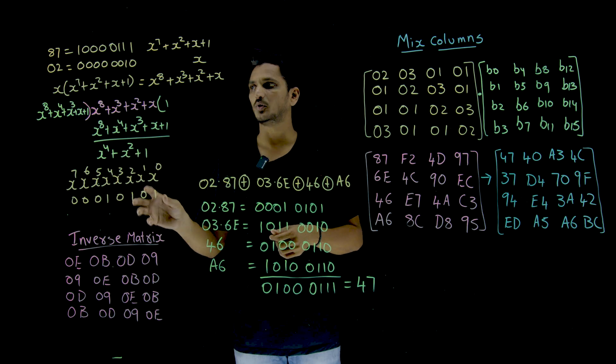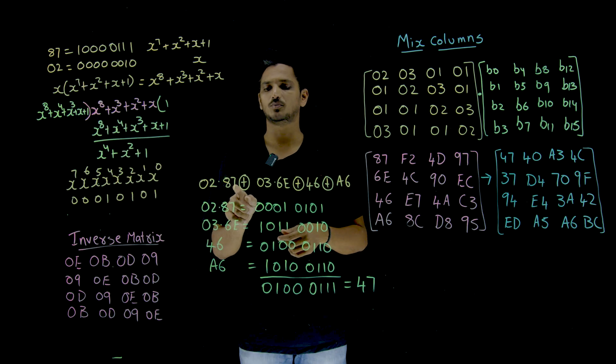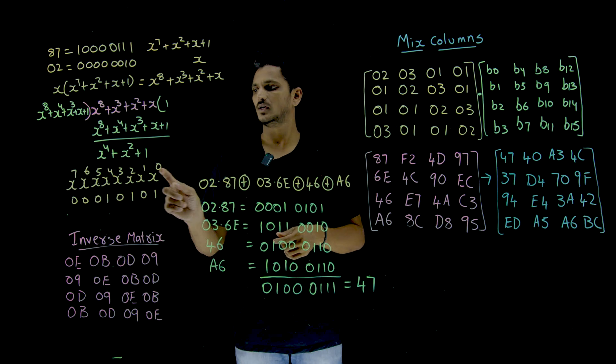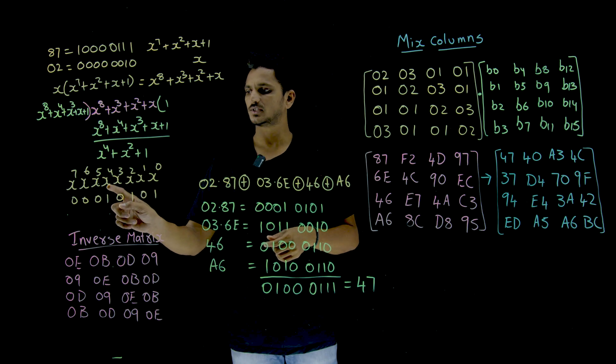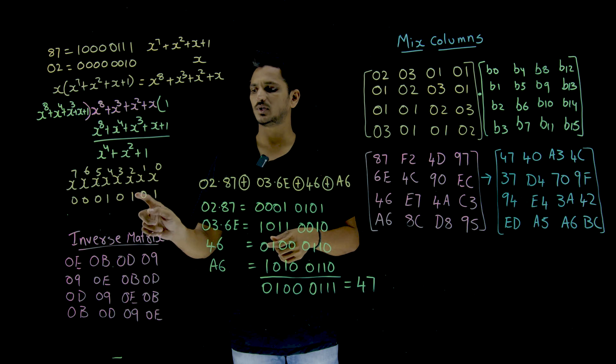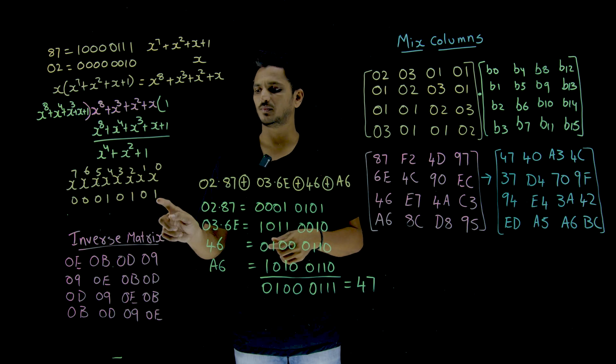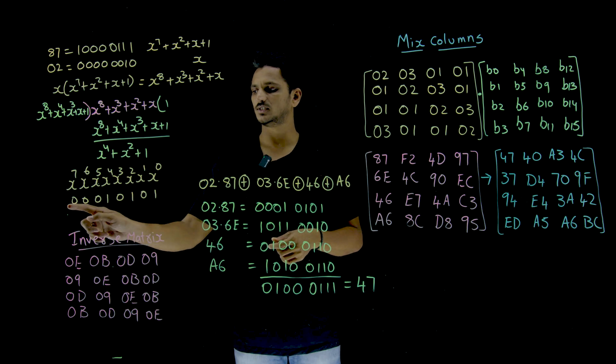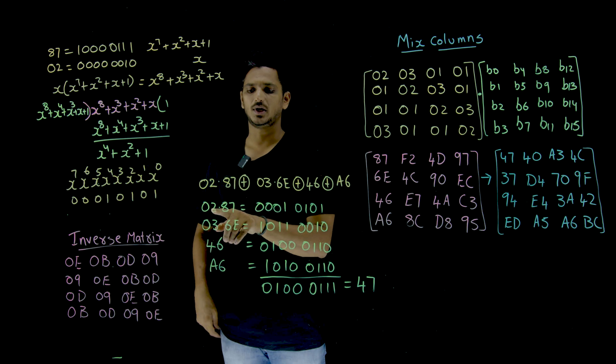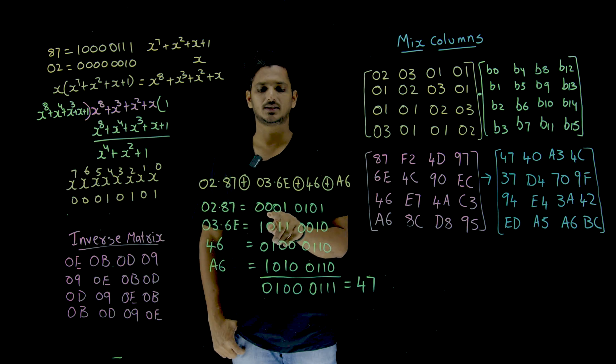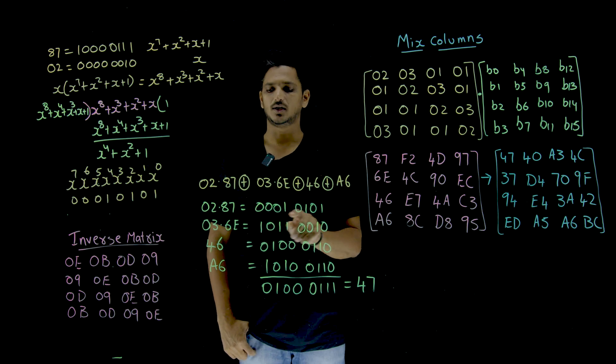This is our output when you multiply 02 multiplied by 87. So, X power 4 means in place of X power 4, place 1. X square means 1. In place of 1 means X power 0 is equal to 1. This is the byte. So, if you multiply 02 multiplied by 87, this is the byte you got.